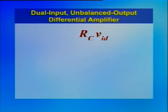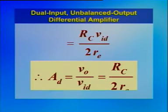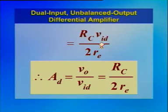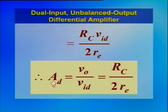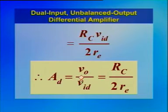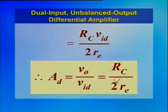The simplified expression is V0 equal to RC·VID divided by 2RE, where VID is the differential input voltage defined as VS1 minus VS2. Therefore, the differential voltage gain AD is defined as the ratio of output voltage to differential input voltage, which equals RC divided by 2RE.